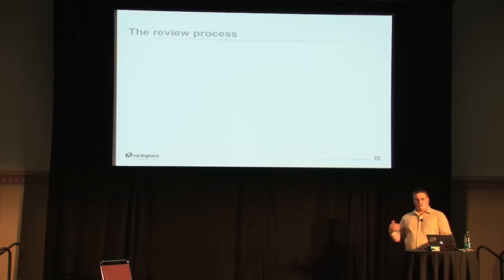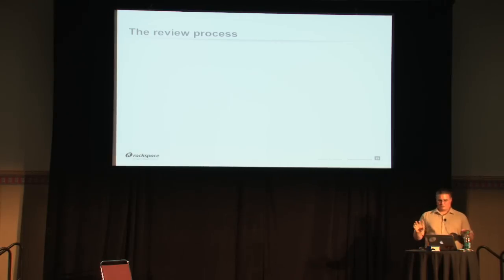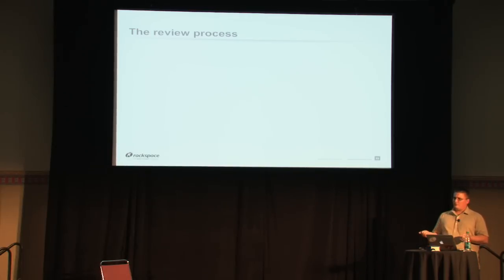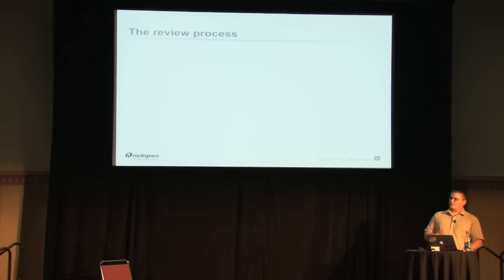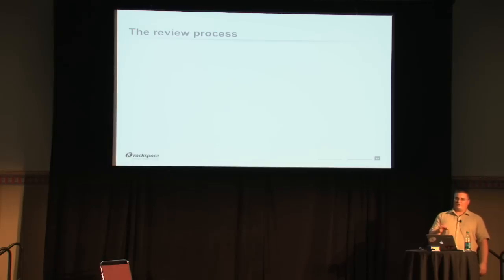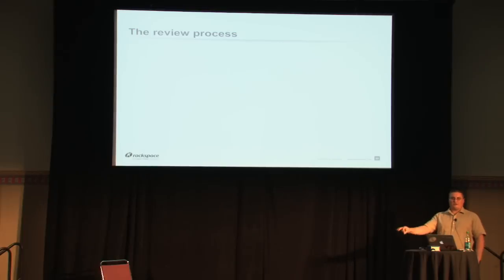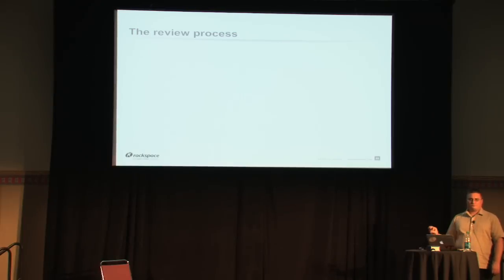Then humans will come along and say it looks good, or they don't like something. There are four possible scores you can get: +1 means 'I like this code but I'm not a core reviewer.' +2 means 'I like this code and I am a core reviewer — I think we should put this in the code base.' And then you get the inverses: -1 means 'I'm not a core reviewer and I don't like this.' -2 is a little special — it means 'I'm a core reviewer, I hate this code, do not submit it without my permission.' They're kind of rare, but in general what they're saying is 'I think this is a bad idea and should not land without significant conversation.'